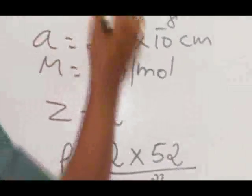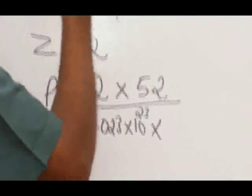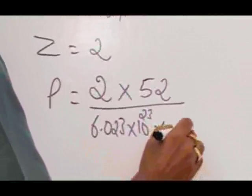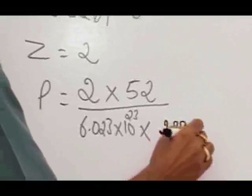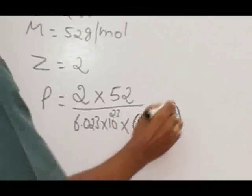Here we have to put the volume. Since edge length is given and it is a cube, the volume is A cubed. So we write (2.88 × 10^-8)³.